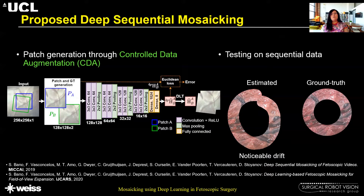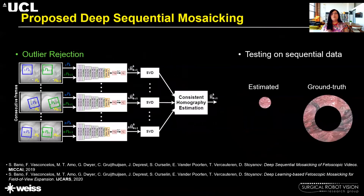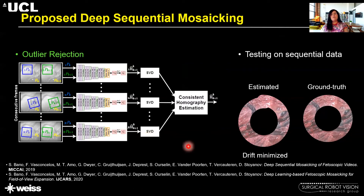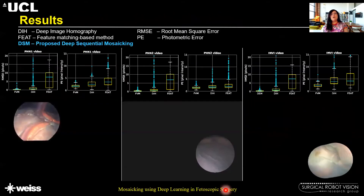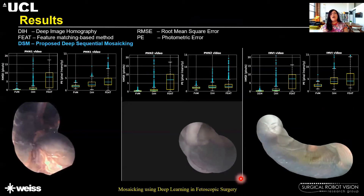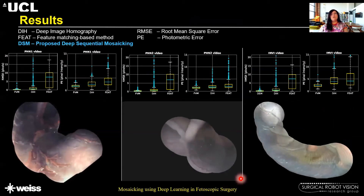To further improve results, we propose outlier rejection at test time. Given a pair of consecutive frames, we extract several pairs of patches at random, obtain the four-point homography for each, and apply a median filtering stage to obtain the most consistent homography estimate. This significantly minimized the drifting error. We tested this approach on five diverse datasets ranging from synthetic data to ex vivo data, phantom data, and in vivo data.